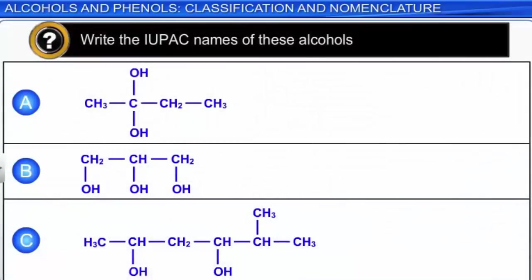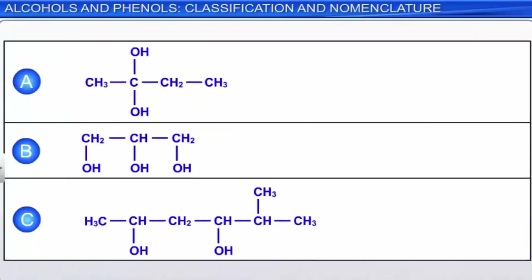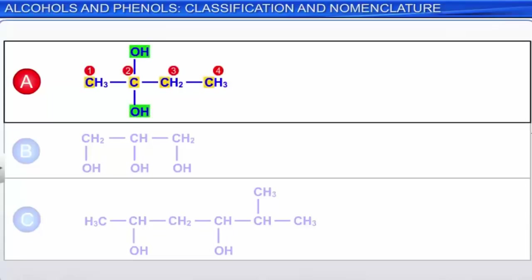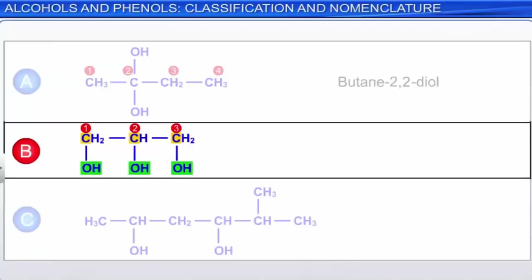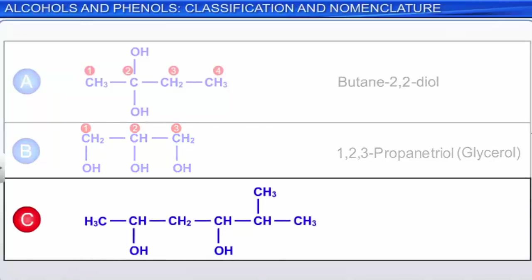Molecule A has a 4-carbon chain and 2 hydroxyl groups attached to carbon 2, giving the IUPAC name butane-2,2-diol. Molecule B has a 3-carbon chain with one hydroxyl group on each carbon; its IUPAC name is 1,2,3-propanetriol and the common name is glycerol. Molecule C has a 6-carbon backbone with hydroxyl groups at carbons 2 and 4 and a methyl group at carbon 5, making it 5-methyl-2,4-hexanediol.